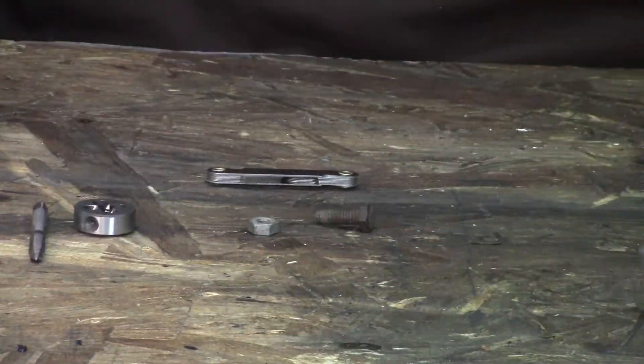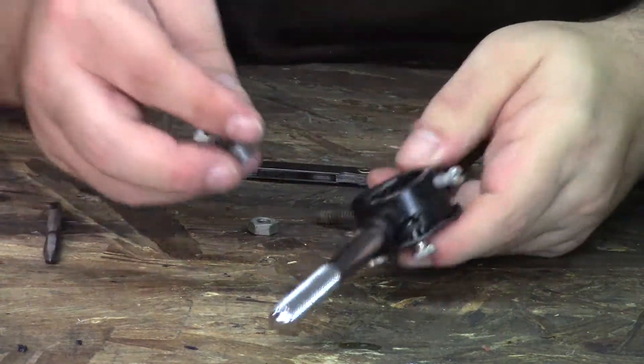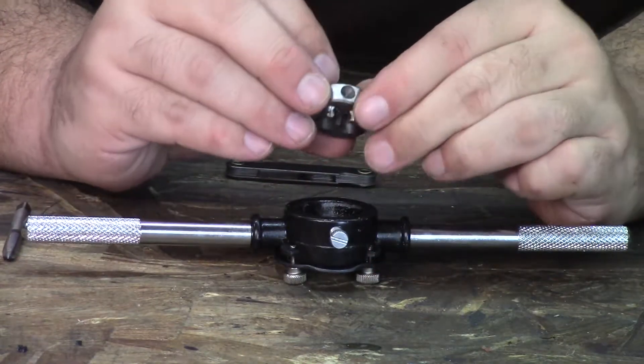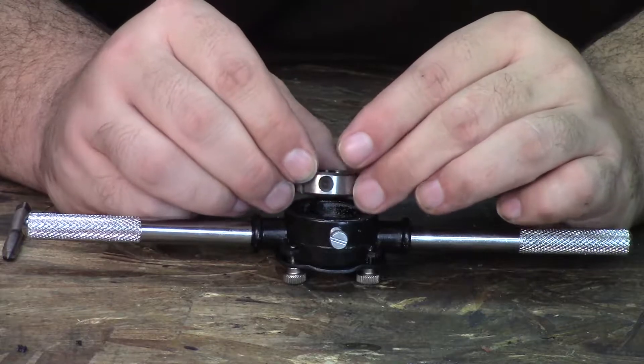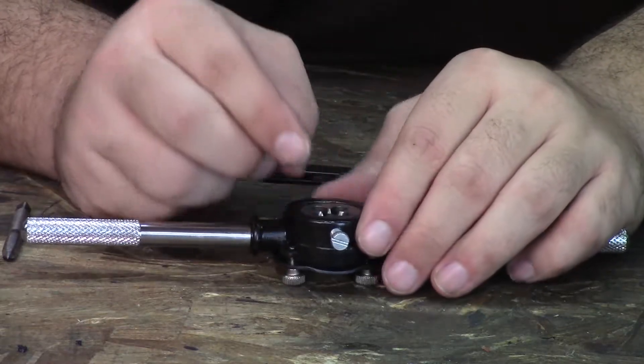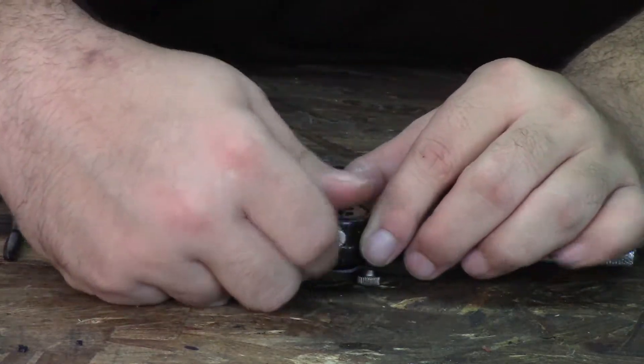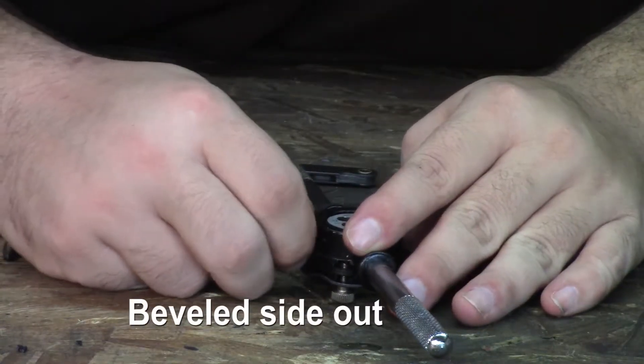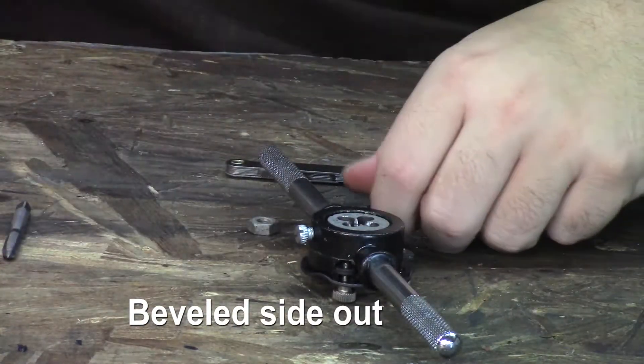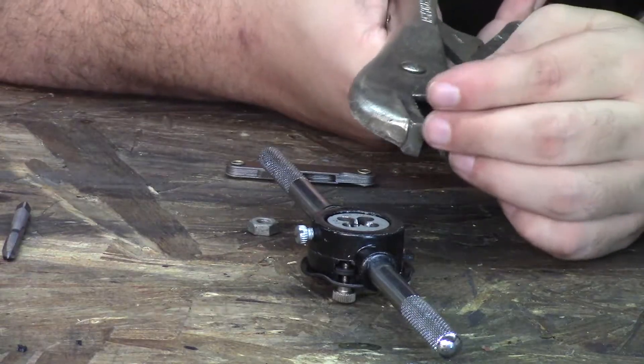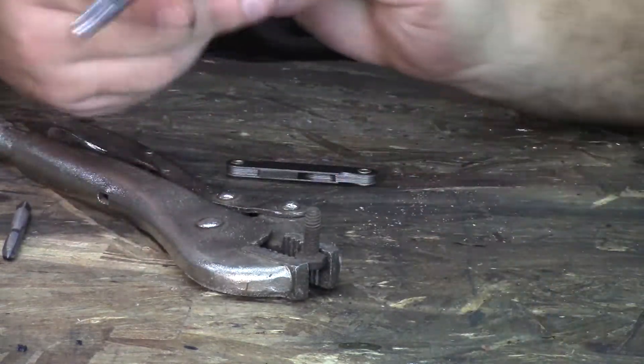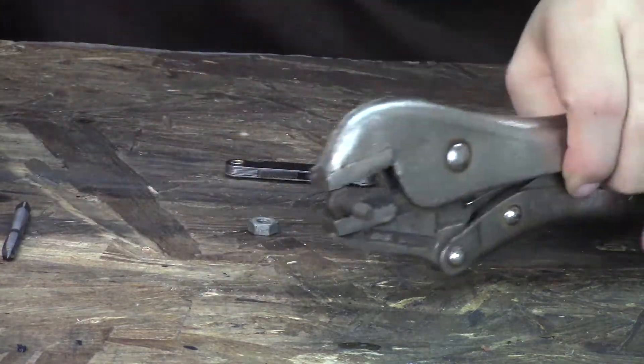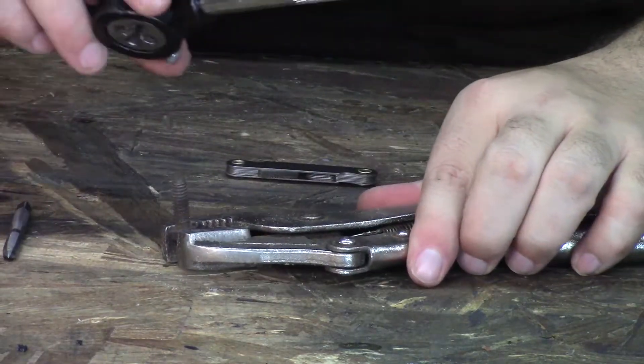This is really simple. There's a beveled hole on the die that just slots right in. You screw it down nice and tight. You should do this in a vise, but I'm just going to use a pair of vise grips for the demo.